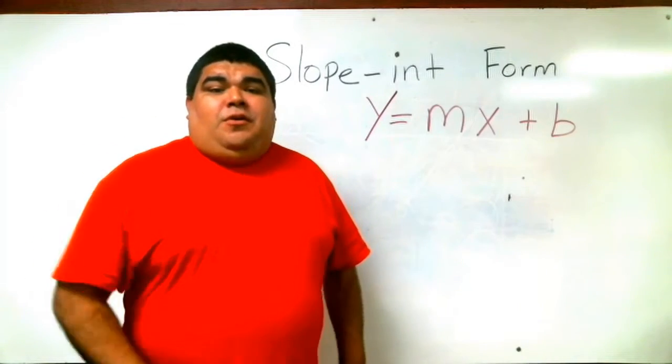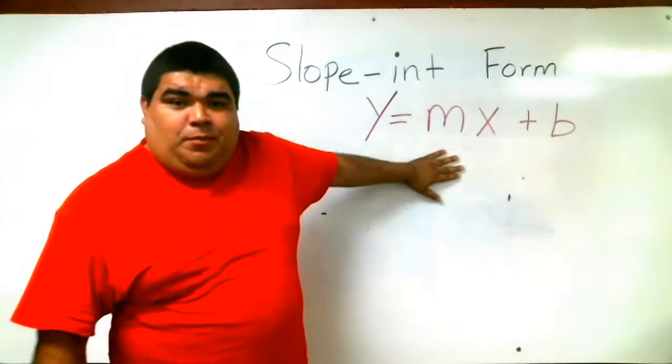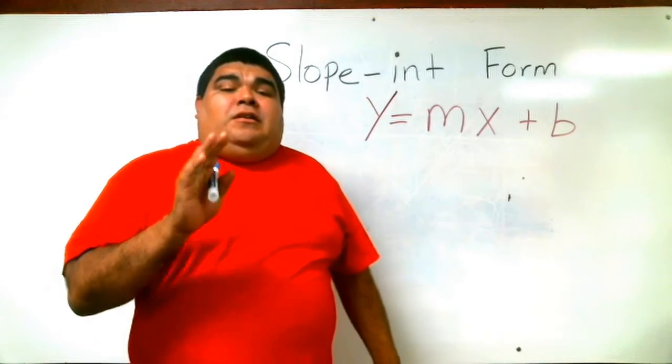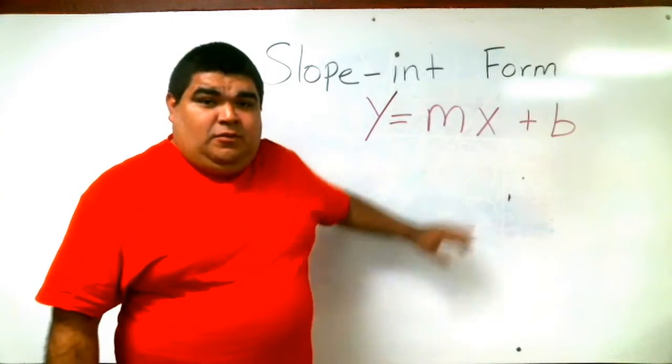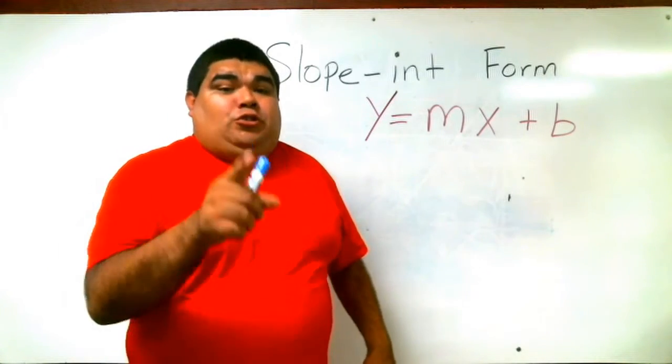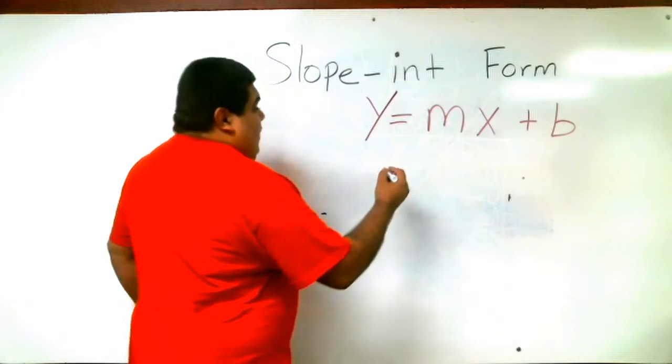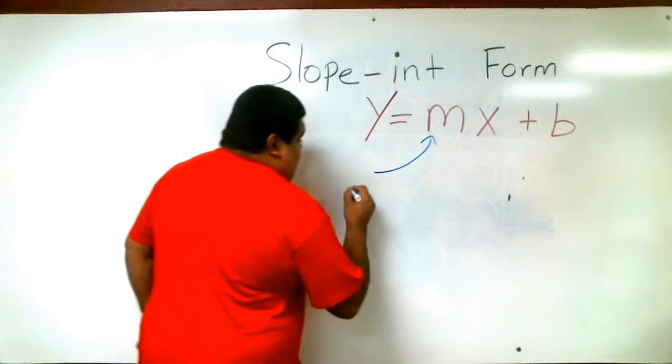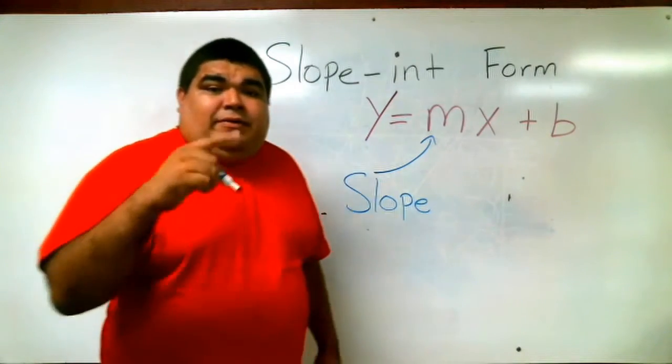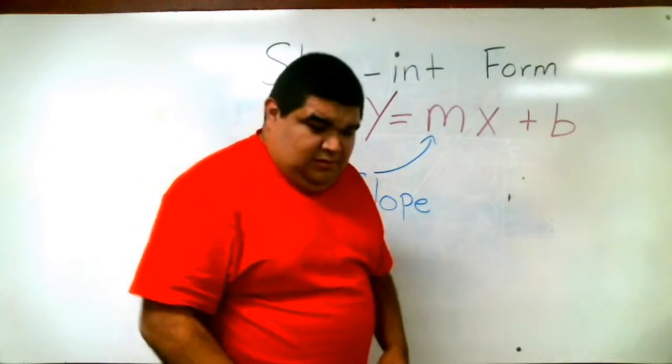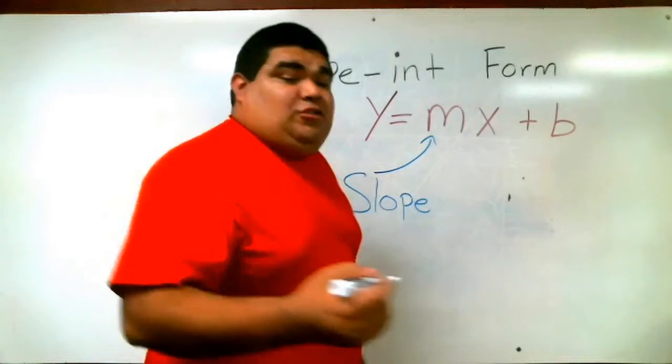All right, guys. Remember, now that we have the formula we're going to use for today, we have the equation up on the board as well. The basic stuff to this equation is your m is always your slope, remember from last class. The b at the end is known as the y-intercept.